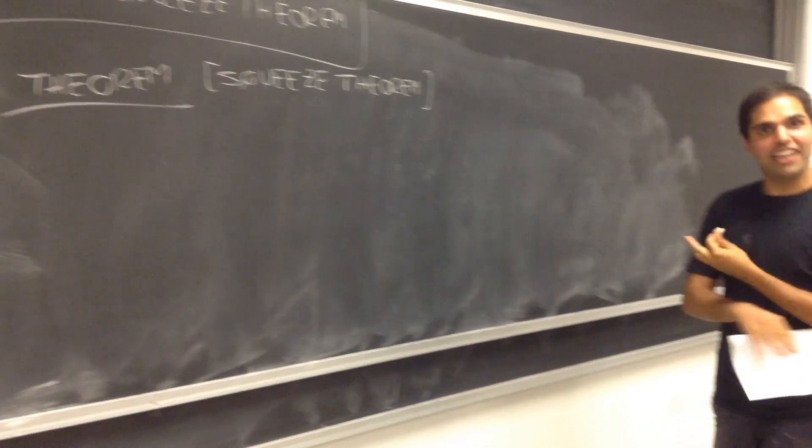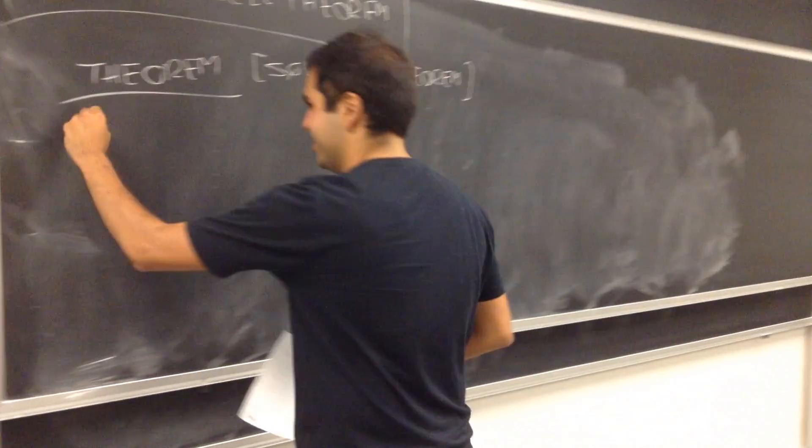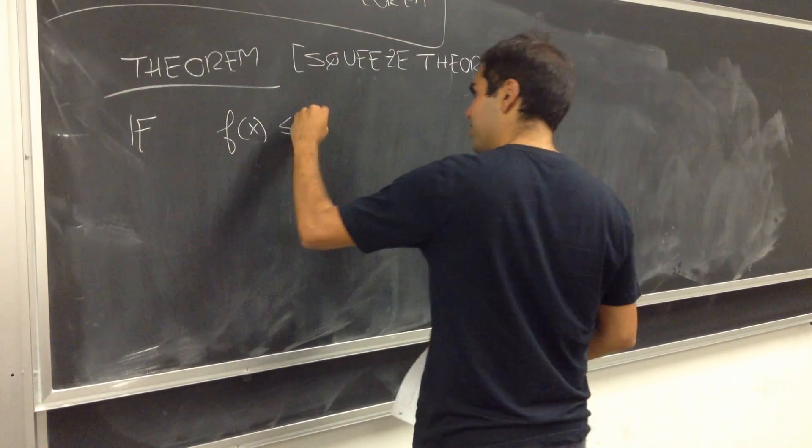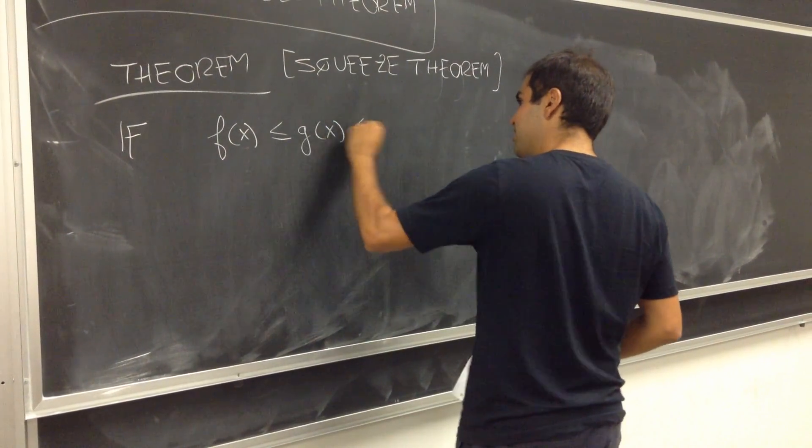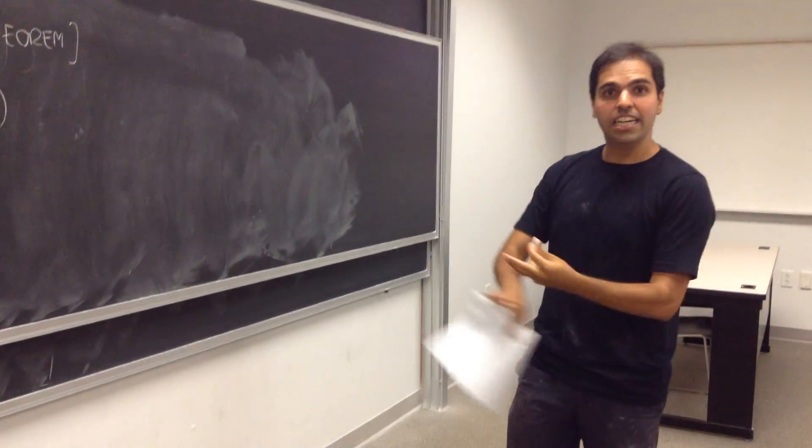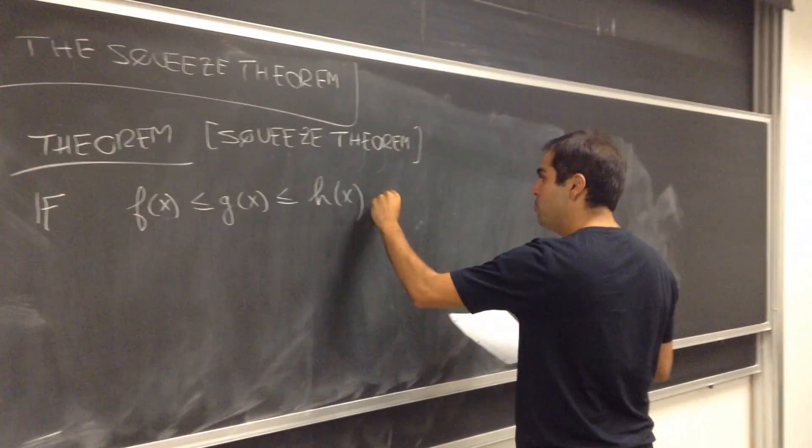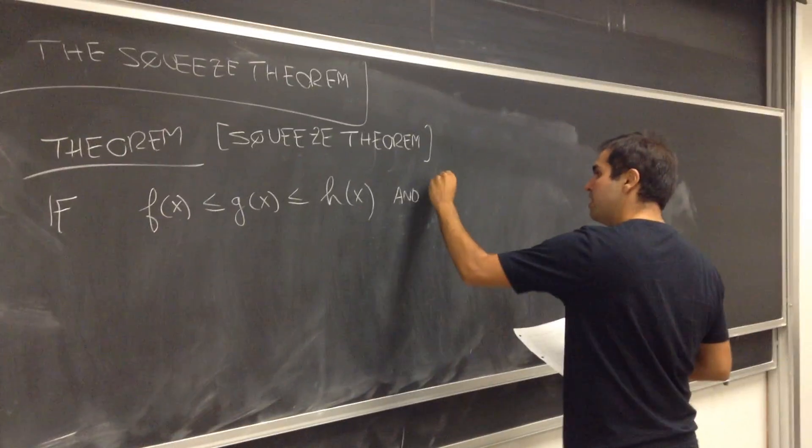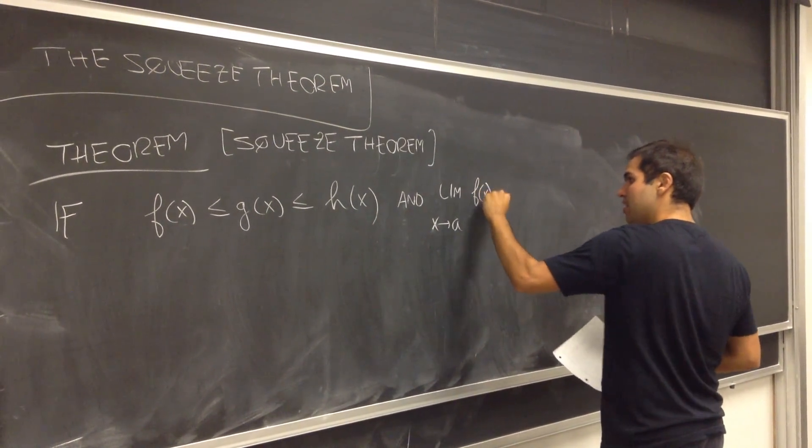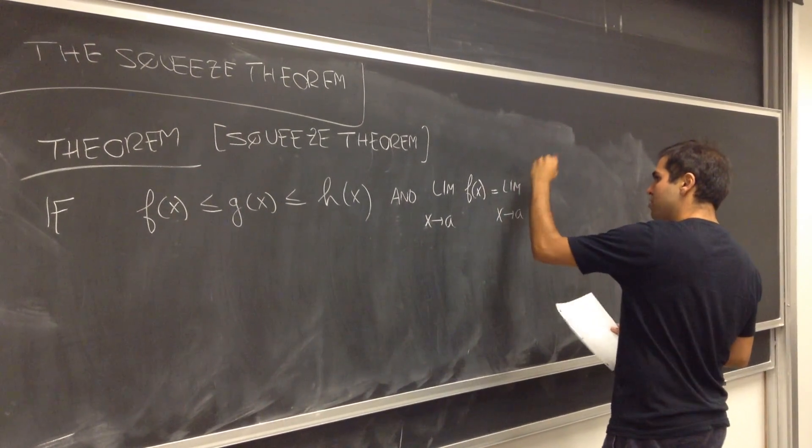By the way, it's the mathematical version of a hug, you know, because you will be hugging some functions. It says that if f of x is less than or equal to g of x, is less than or equal to h of x. In other words, if some function g is squeezed between two functions f and h, and moreover, you know that the limit as x goes to a of the smaller function equals to limit as x goes to a of the bigger function,